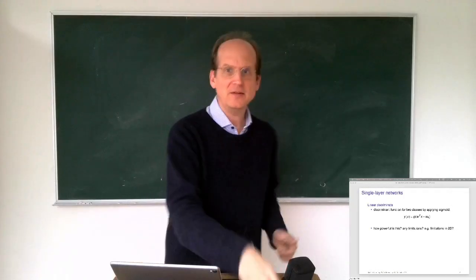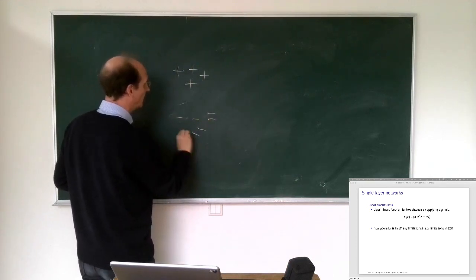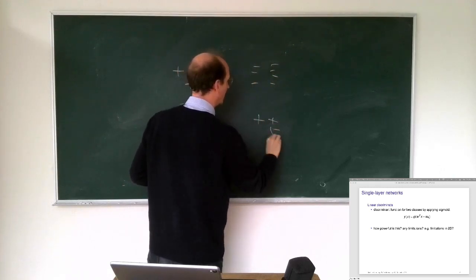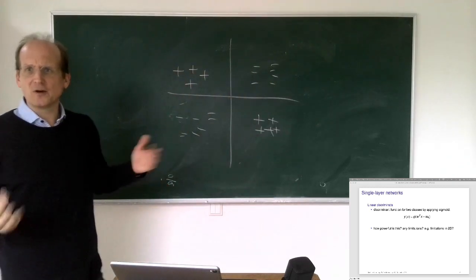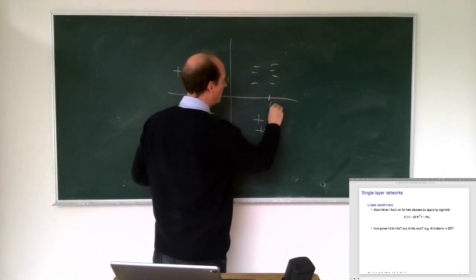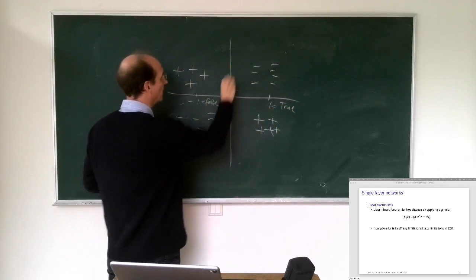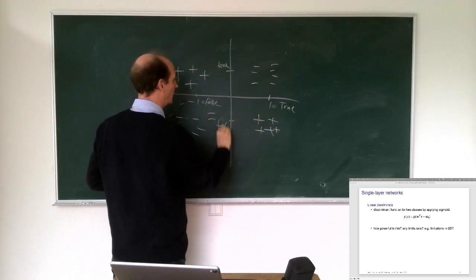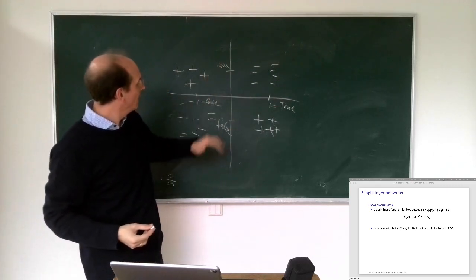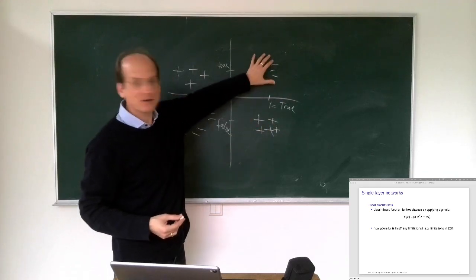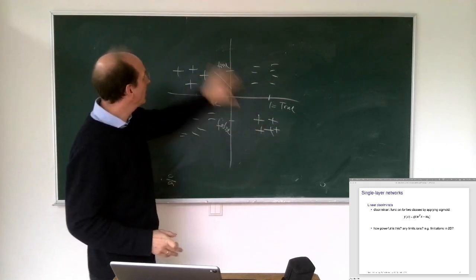There is the famous XOR problem, where two classes are located like an XOR. By saying one equals true and minus one equals false, XOR means only one of them can be true - if both are true, the whole thing is false, and if both are false, it's also false. It's only true when exactly one of them is true. You can also generalize it to arbitrarily many dimensions.